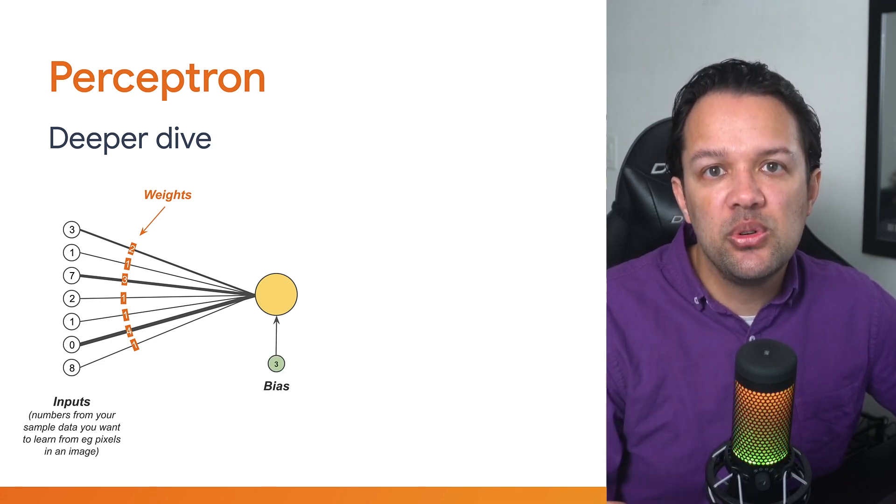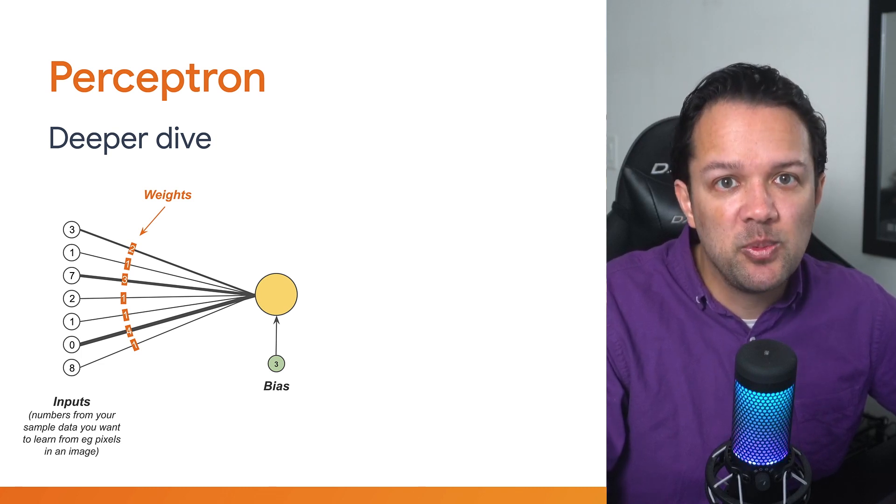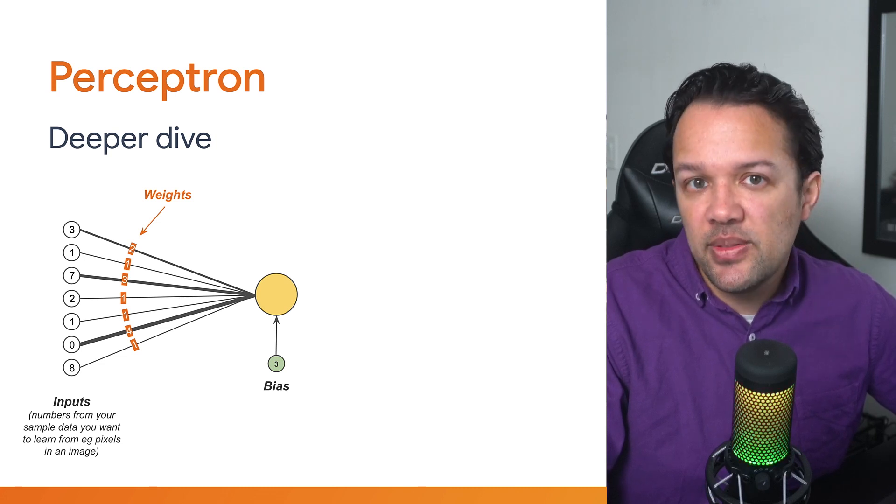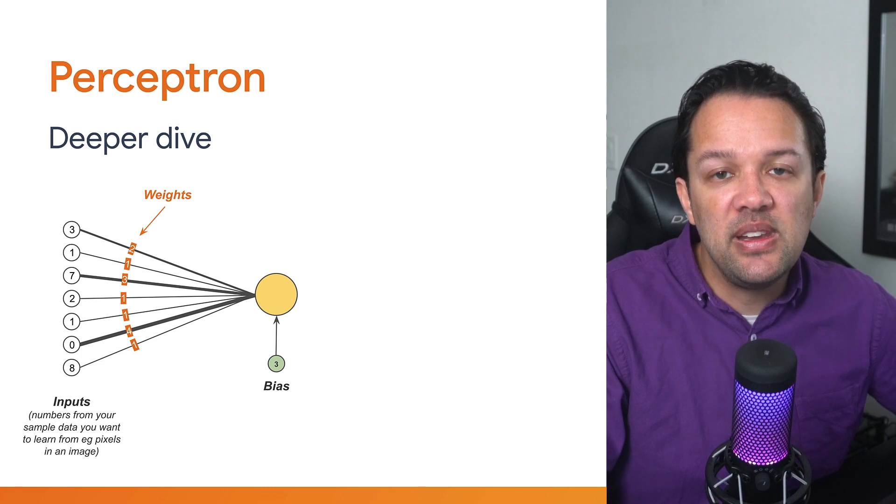Next, something called a bias is added. This is just a single number that's initially randomly chosen, just like the weights were. In this example, the number 3 is chosen randomly. And just like the weights, this neuron can change its value when it's learning if it needs to.